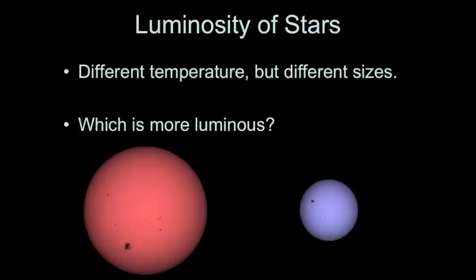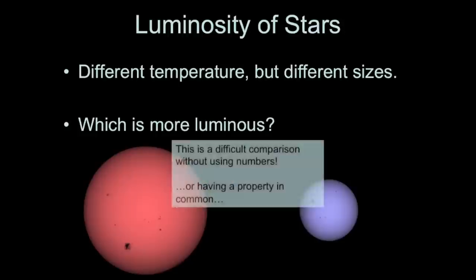And I want to know which one is more luminous. This is difficult. I don't have any property in common here, either luminosity, temperature, or surface area. So it's difficult to make a concrete comparison without knowing some value or number to put in here. Because it could be that the larger object, even though it's cooler, is more luminous. But at which point is it large enough for that to occur? This is difficult without having something in common or without using numbers.